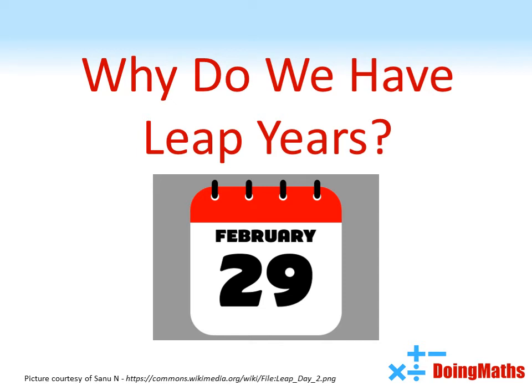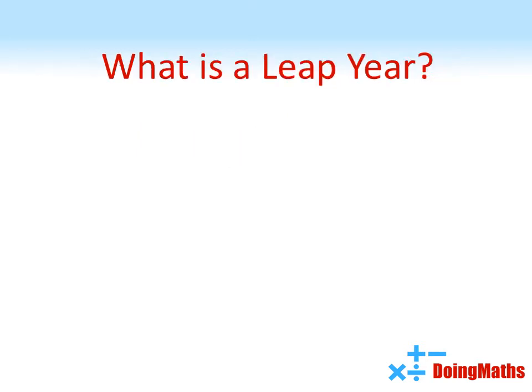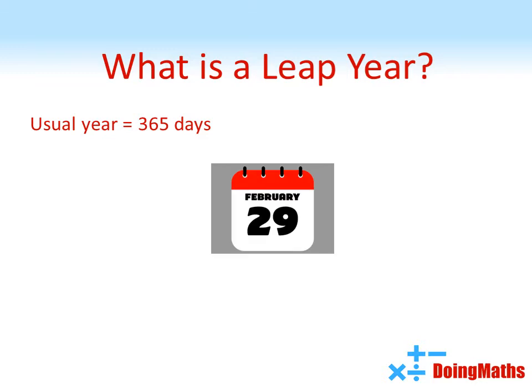Why do we have leap years? First of all, what is a leap year? In a normal year we have 365 days, with February having 28 days. Every four years, however, February gets an extra day, taking the year up to 366 days.